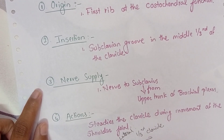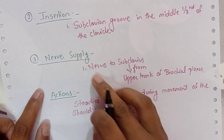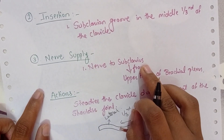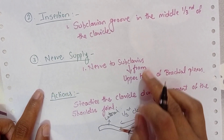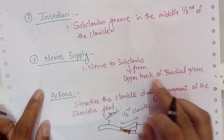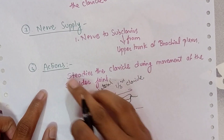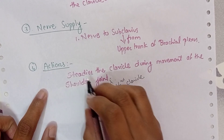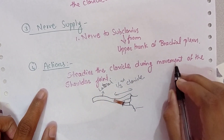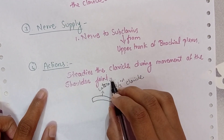We have seen the origin and the insertion. The nerve supply will be the nerve to the subclavius, which arises from the upper trunk of the brachial plexus. The action of the subclavius muscle is that it steadies the clavicle during movements of the shoulder joint.